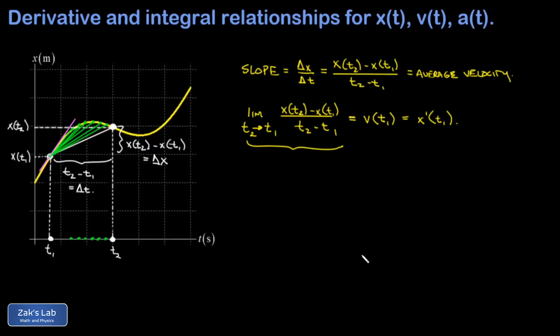So two major conclusions for this slide: first, average velocity on a finite time interval is just given by the change in position over change in time; and second, instantaneous velocity at a moment in time is the time derivative of the position function.